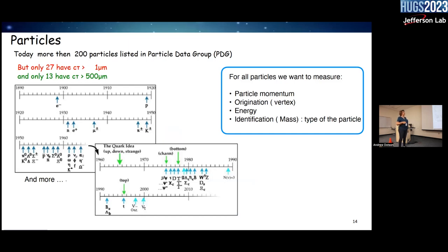We have more than 200 particles in the particle data group, but fortunately only 27 have a lifetime long enough to travel more than 1 micron, and only 13 have a lifetime greater than 500 microns. For reference, 100 microns is the thickness of your hair. So we only have to deal with 13 particles. For all those particles we must measure momentum, origin vertex, energy, and identify them.